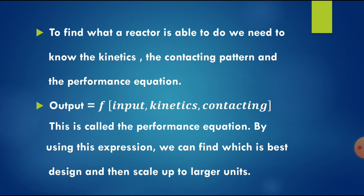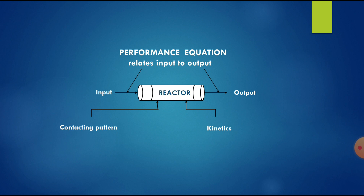To find what a reactor is able to do, we need to know the kinetics, the contacting pattern, and the performance equation. For any reactor, output is a function of inputs, kinetics, and contacting pattern — this equation is known as the performance equation. By using this expression we can find which is the best design, and then scale up to larger units. The performance equation relates the input to the output of the reactor.